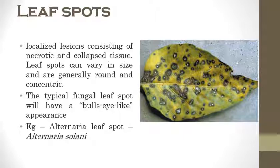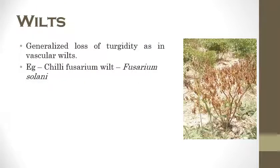Don't worry about all those fungal names — when we get into classification it will be very easy to understand. The next one is wilting, which means desiccation or loss of water. The loss of turgidity is the most prominent and characteristic symptom of wilts. The xylem vessels in the stem cannot absorb water, so the plant starts drying and desiccating. The best example is chili Fusarium wilt which is caused by Fusarium solani.